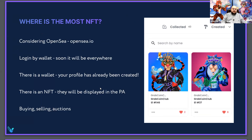There are many sites and projects that sell their NFTs. This usually happens on the project site itself, such as GrabCoin Club. You need to go to the site with the MetaMask plugin enabled, and the site system will see your wallet and all the assets on it automatically. Authorization on project sites usually occurs by pressing the Connect Wallet button in the top right corner of the site. The same is true on the GrabCoinClub.com website.